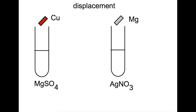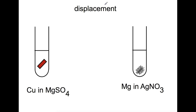So we have two potential reactions here: a piece of copper being placed in magnesium sulfate, and a piece of magnesium being placed in silver nitrate. If you were to carry out this reaction you would find that the copper and magnesium sulfate do not react. Copper is less reactive than magnesium so the oxidation and reduction processes cannot happen. However, if you were to place a piece of magnesium into silver nitrate you will see pieces of silver being formed around where the magnesium was.